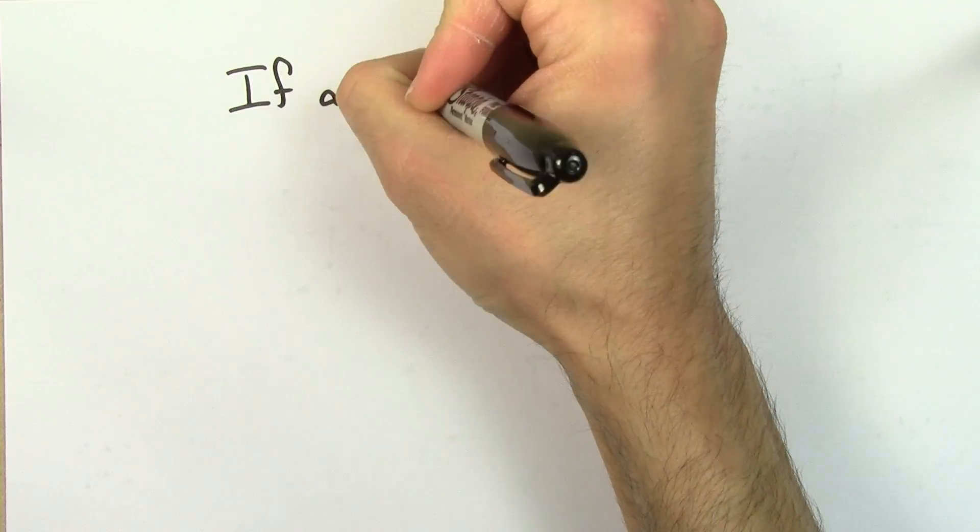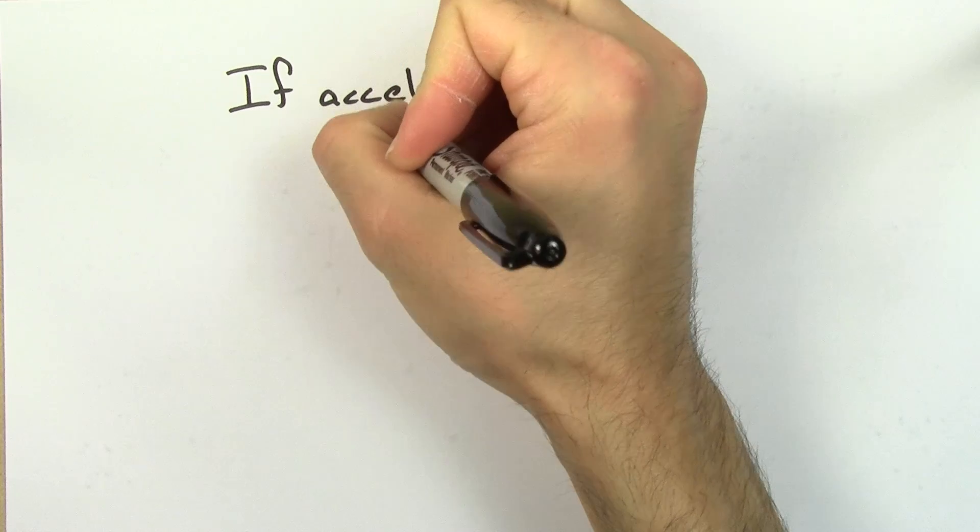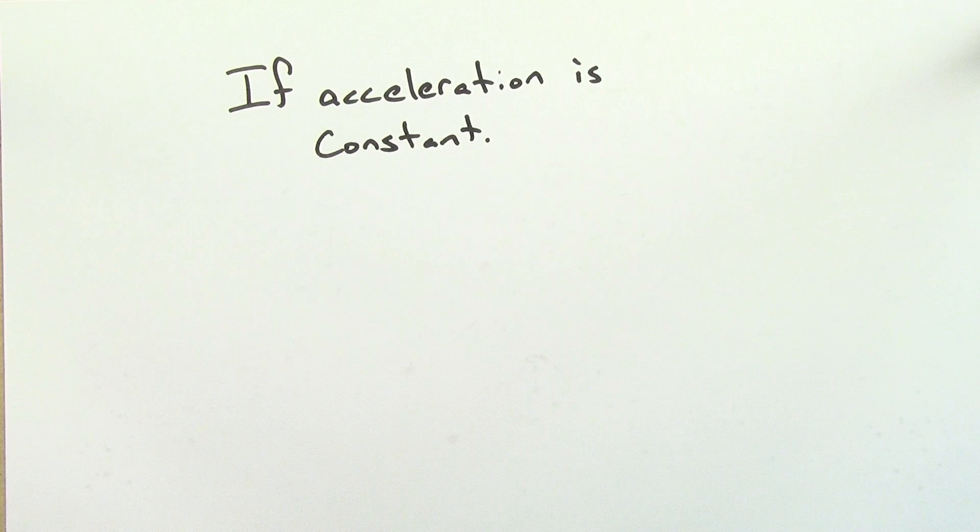A third way to find the instantaneous velocity is for another special case where the acceleration is constant. If the acceleration is constant, you can use the kinematic formulas to find the instantaneous velocity v at any time t.